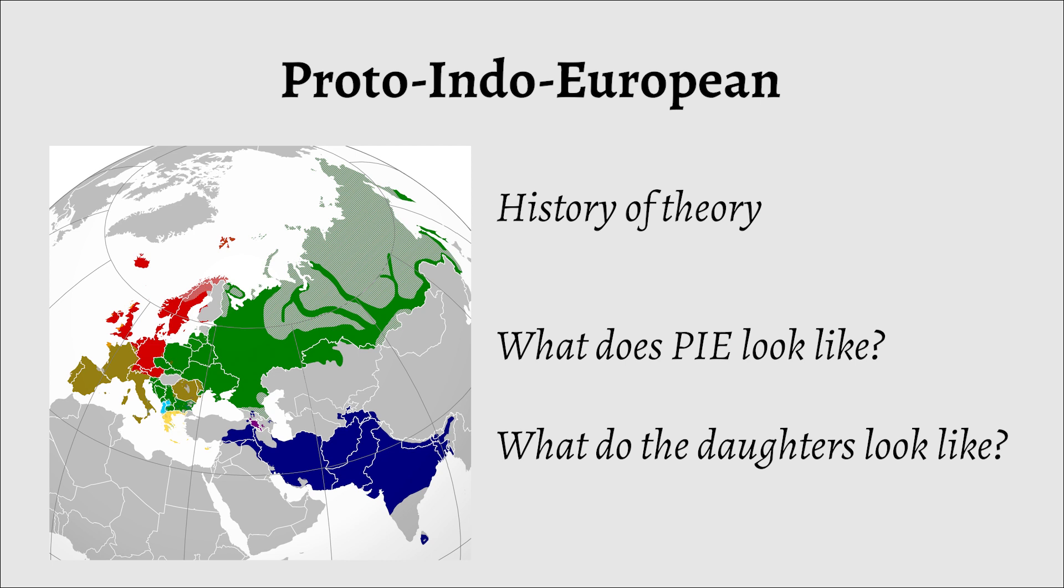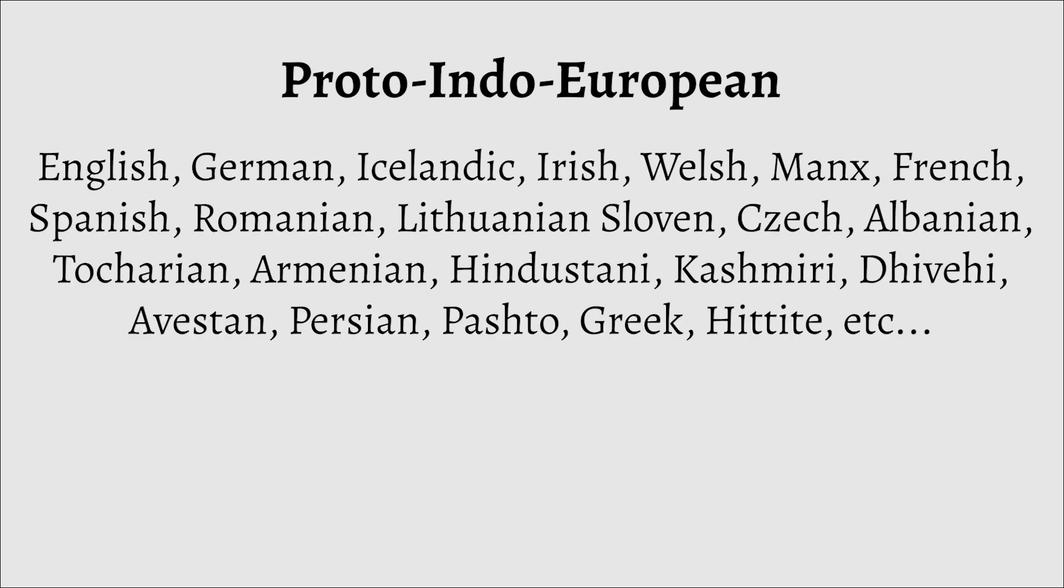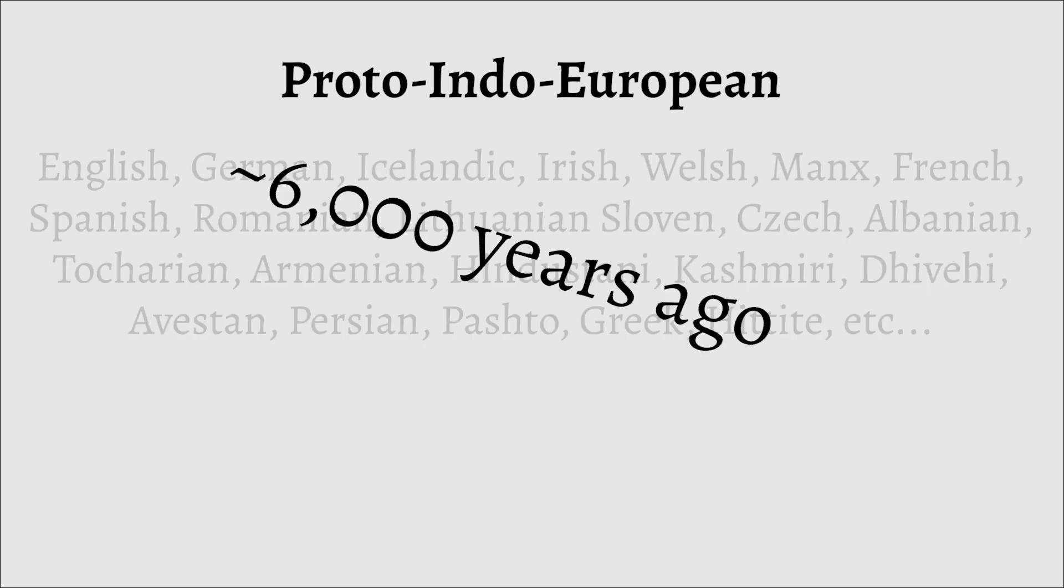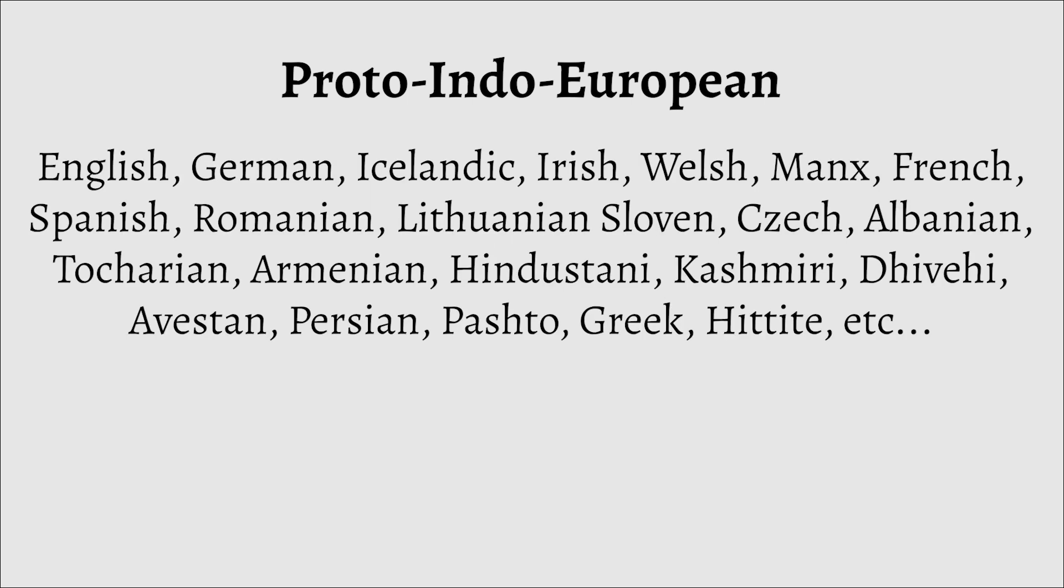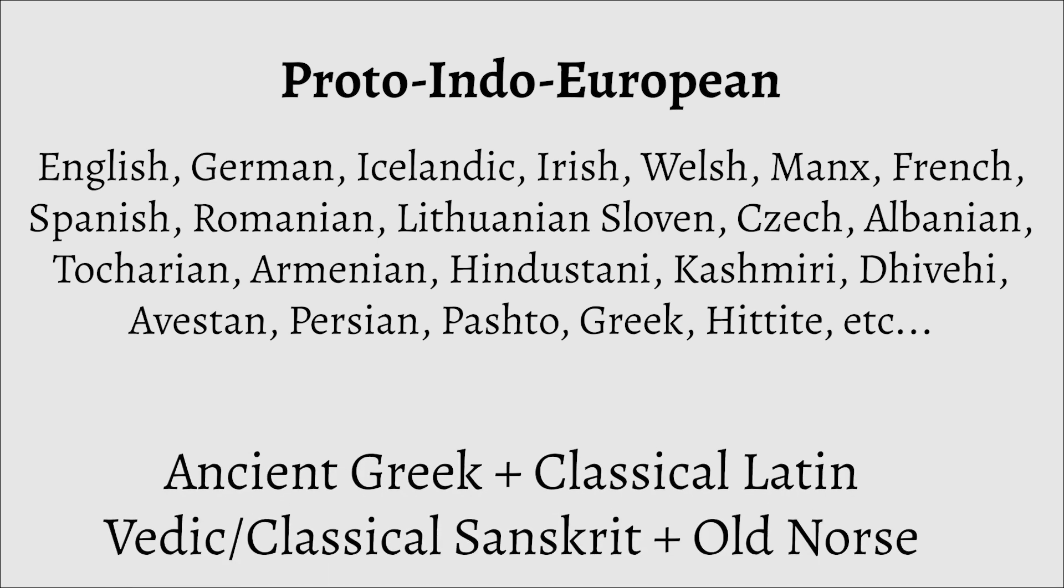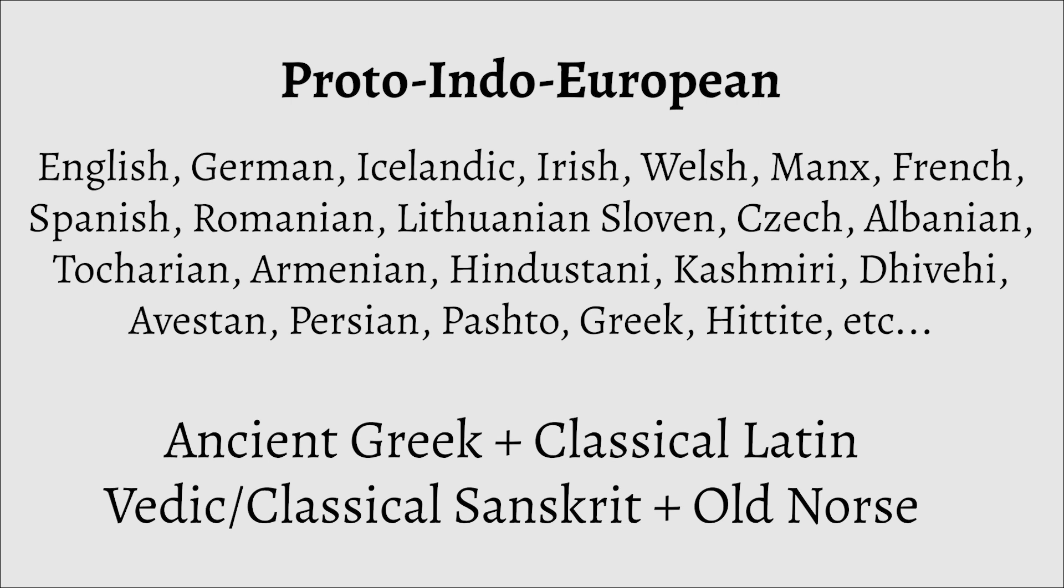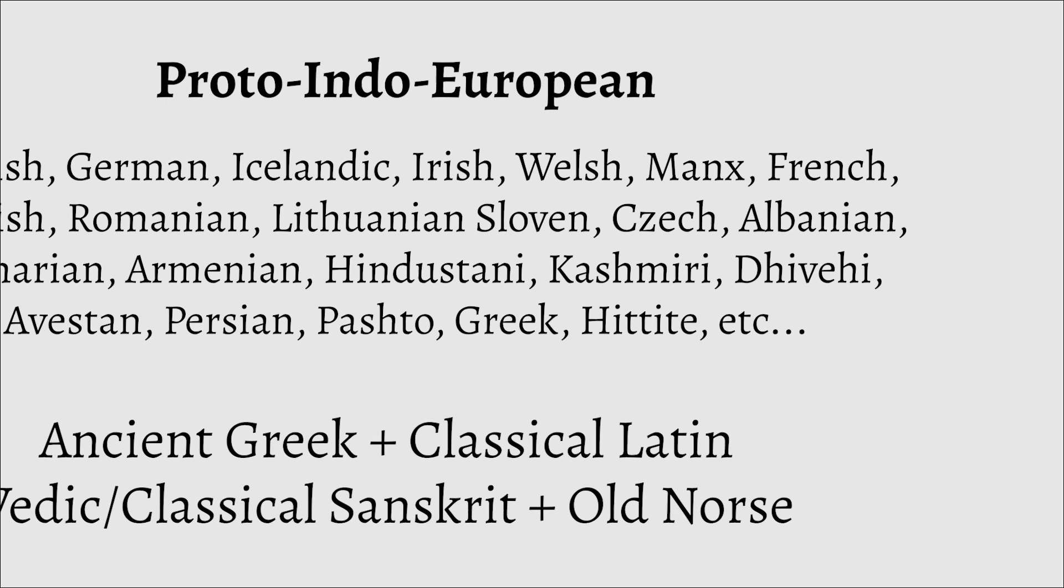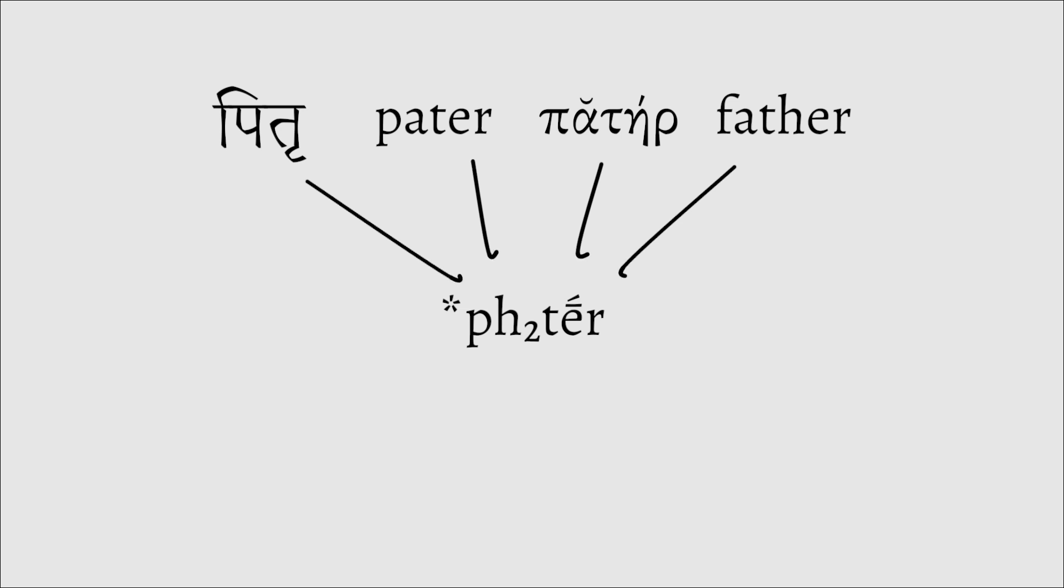But the basic premise you need to know is that all of these languages are related to one another and have descended from one common ancestor roughly 6,000 years ago or so. And by comparing all of these languages to one another, particularly the older recorded forms of the languages, Ancient Greek, Classical Latin, Vedic and Classical Sanskrit, Old Norse, etc., we have been able to reconstruct what this ancestor language looked like, in both phonological and morphological terms.